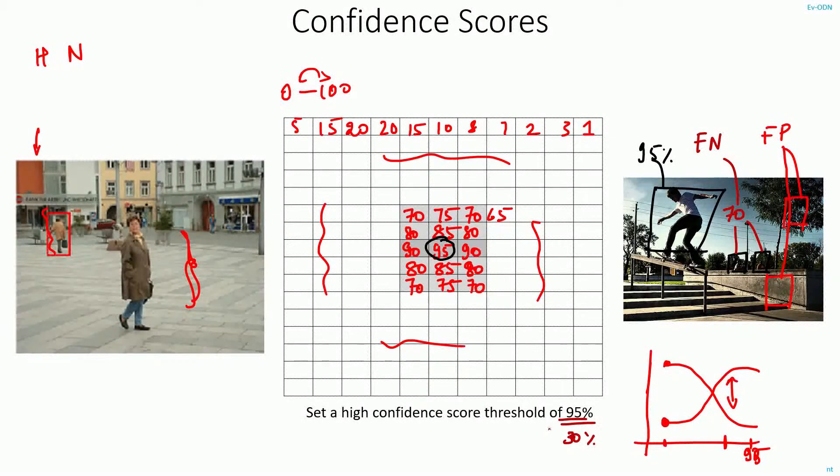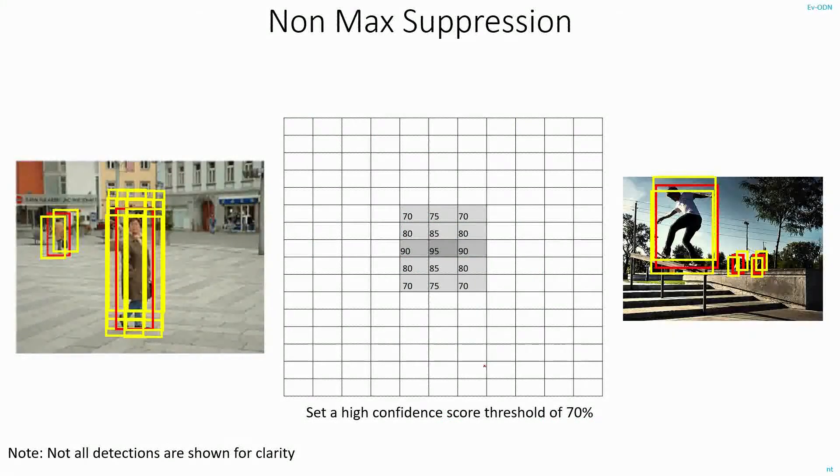Now, let's say by considering all these factors, I set a confidence score threshold of 70%. That is anything above this, I'll be considering it as a true positive. Now, if I take this approach, I'll be still left with some duplicate detections. That is, for this person, only the red box corresponding to a score of 95% is correct. And all other boxes, the yellow ones are all duplicates for the same person.